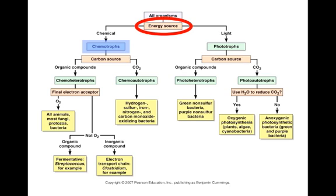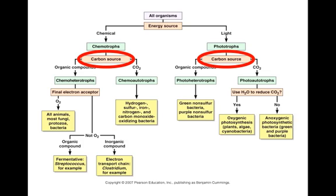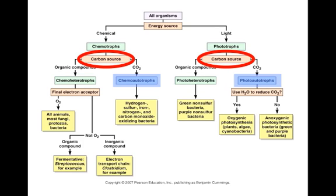The second question is: what is the carbon source? Or in other words, where does the organism get the monomers that it will assemble into polymers, such as muscle proteins or peptidoglycan? The organism either gets the monomers from somewhere else by ingesting organic compounds, making it a heterotroph, or it makes the monomers itself from carbon dioxide, making it an autotroph.